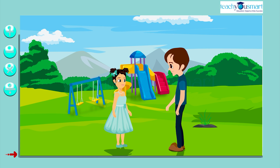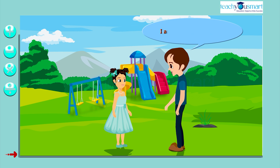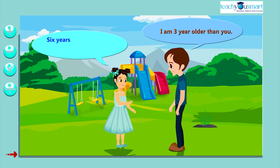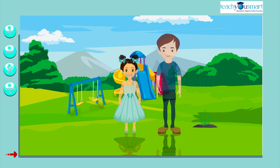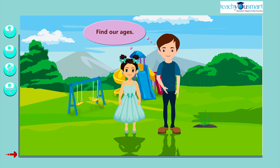Kunwa and Anima are playing in a park. They are having a conversation, let's hear what it is about. Kunwa says: I am three years older than you. Six years ago, your age was four times my age. Find our ages.